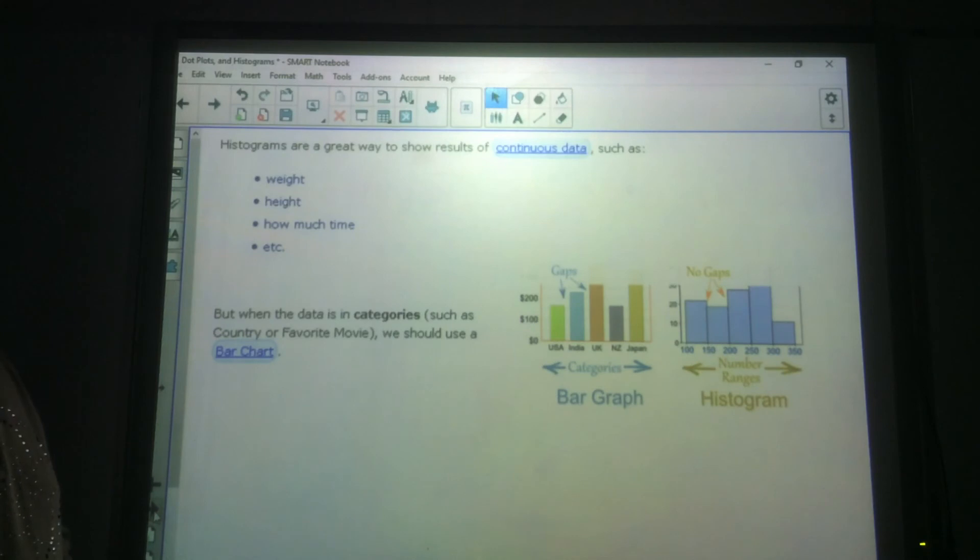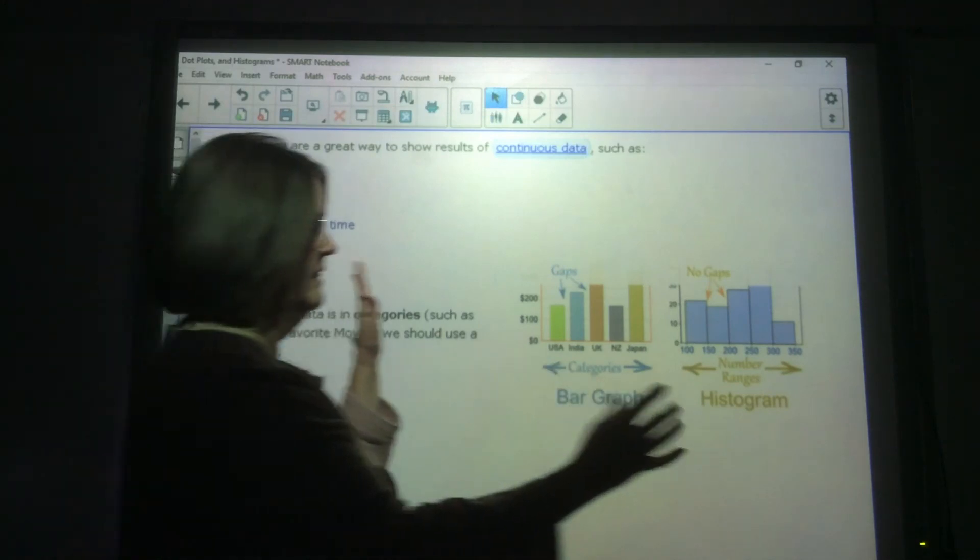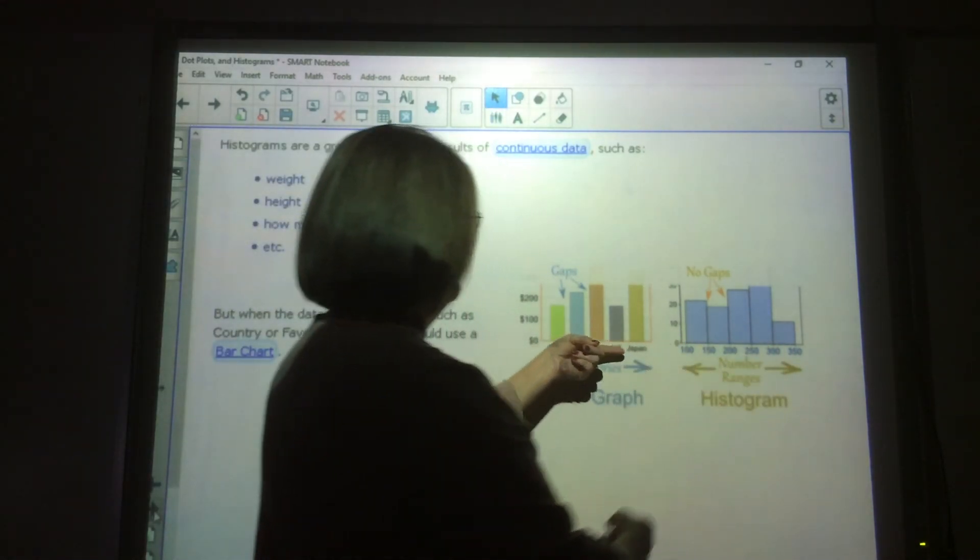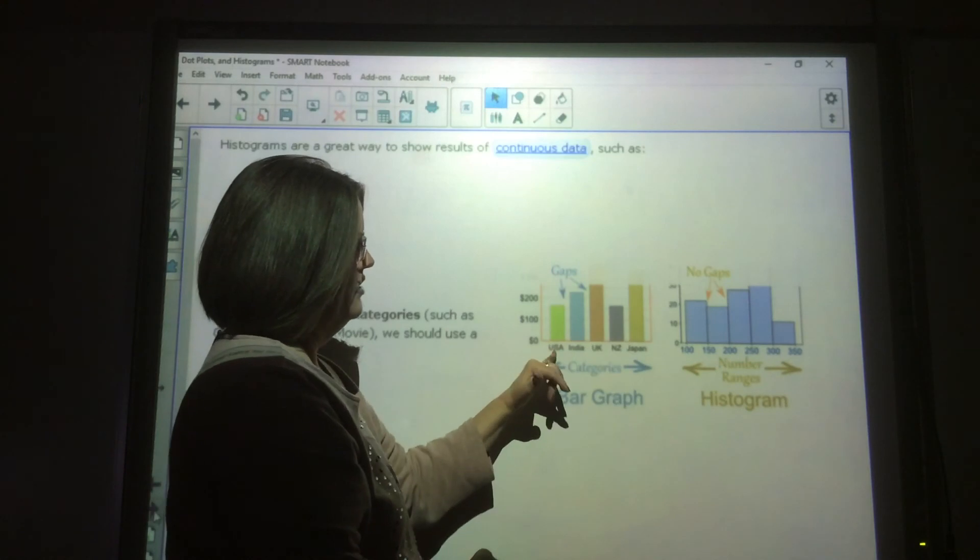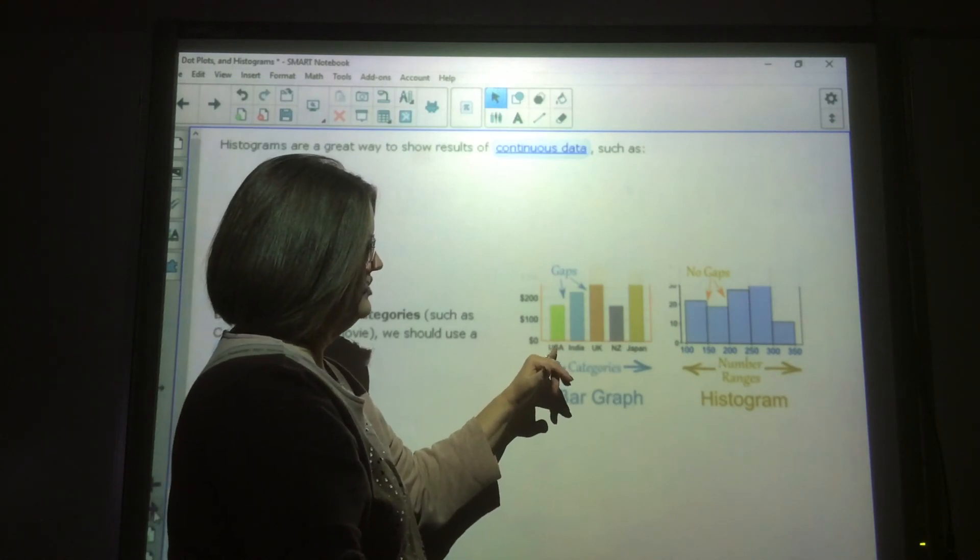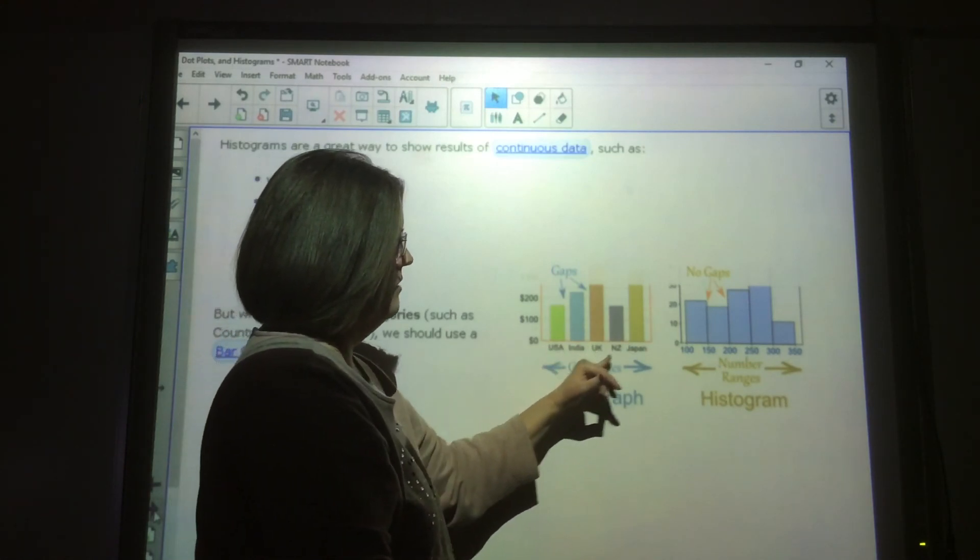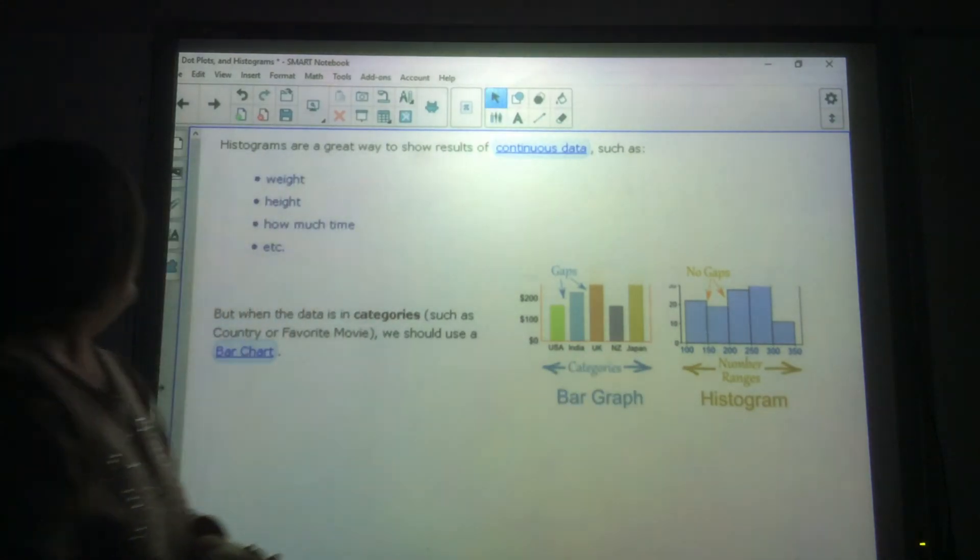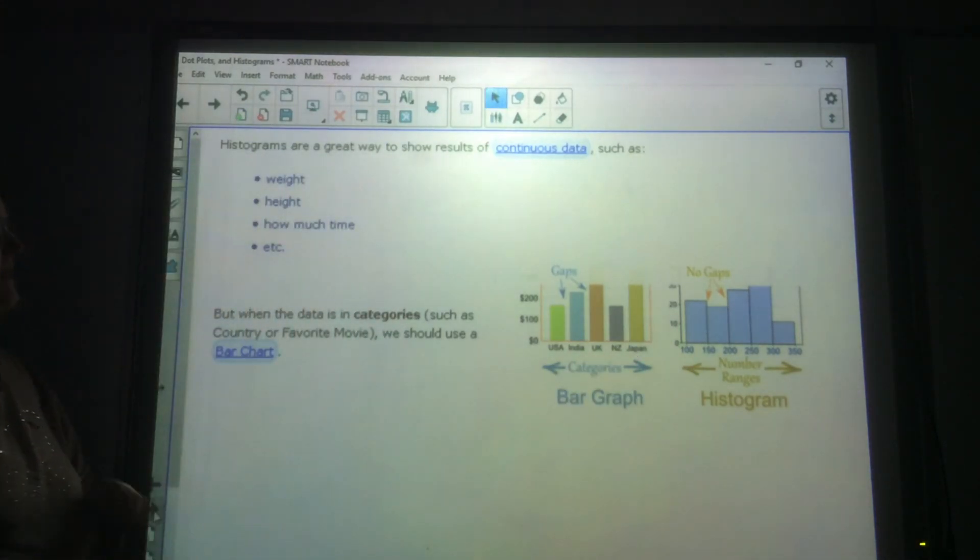All right, histograms are a great way to show results of continuous data such as weight, height, how much time, et cetera. Now, but when we want to use a bar graph, and I don't want to point out again, these are close together. There are no gaps. With a bar graph, you have gaps. And you'll notice this is not a range. This says USA, India, UK, NZ, Japan. All right, but when the data is in categories such as a country or a favorite movie, we use a bar chart, bar graph.